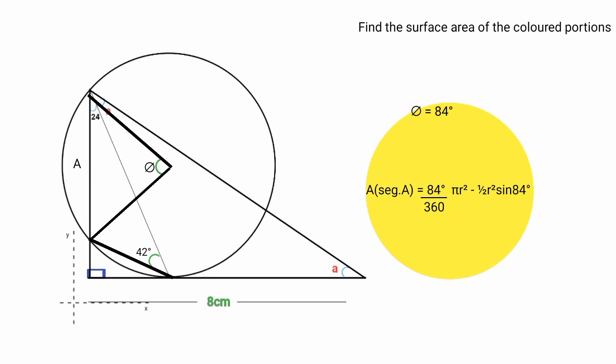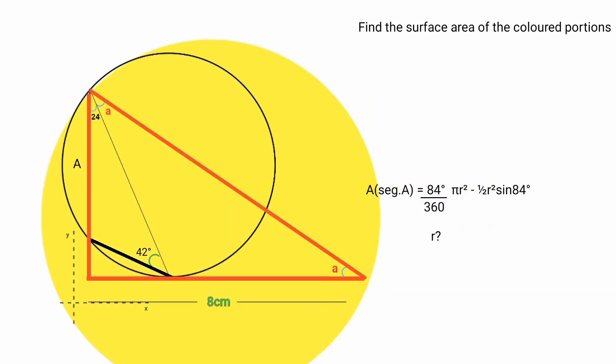Substituting: area of segment A equals 84 over 360 times pi r squared minus 1 over 2 times r squared times sine 84. Pi is 22 over 7. We need the radius r of the circle. From this triangle, if we have the size of this angle, we can use trigonometry to find the length of this side since this is a right angle.